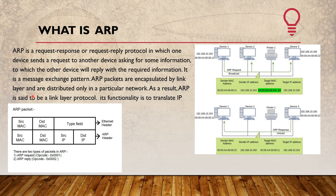In the ARP packet, there is an Ethernet header containing source MAC and destination MAC, and an ARP header also containing source MAC, destination MAC, source IP, and destination IP. The type field in the packet identifies it as an ARP request.